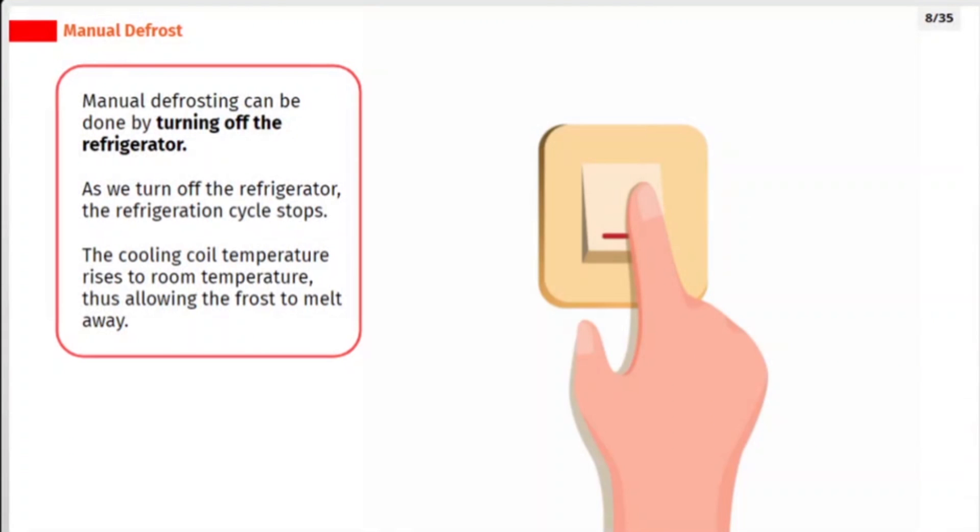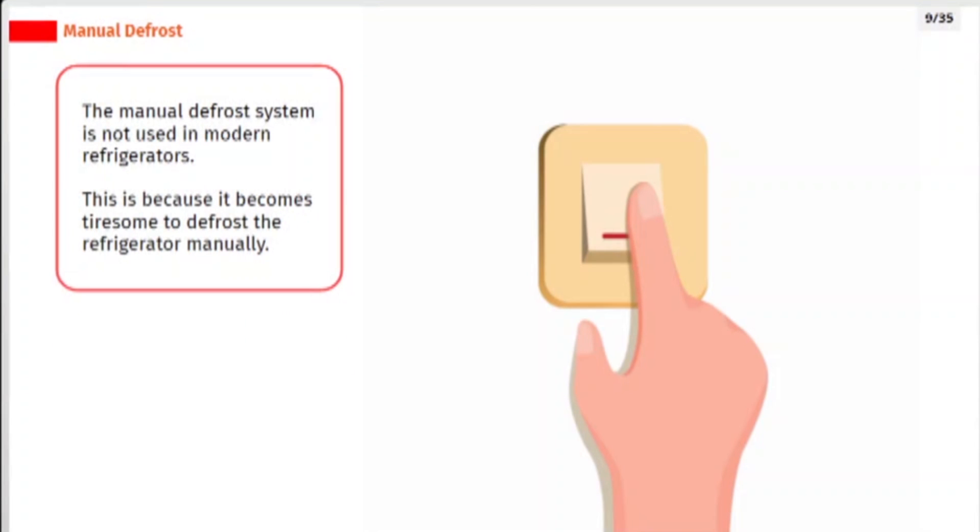Manual defrosting can be done by turning off the refrigerator. As we turn off the refrigerator, the refrigeration cycle stops. The cooling coil temperature rises to room temperature, thus allowing the frost to melt away. The manual defrost system is not used in modern refrigerators. This is because it becomes tiresome to defrost the refrigerator manually.